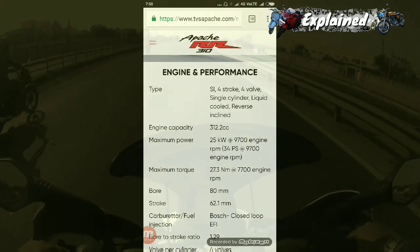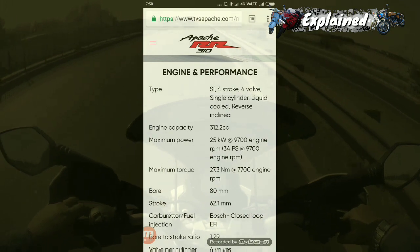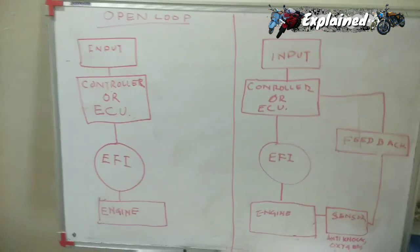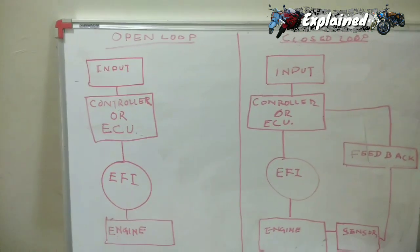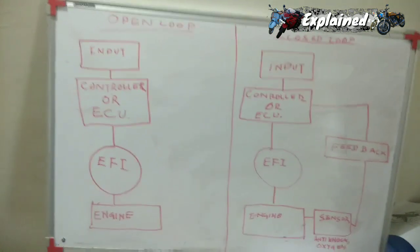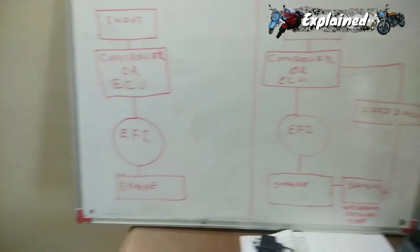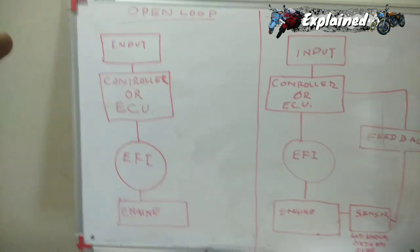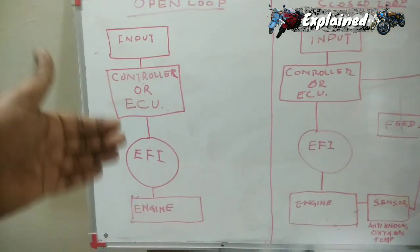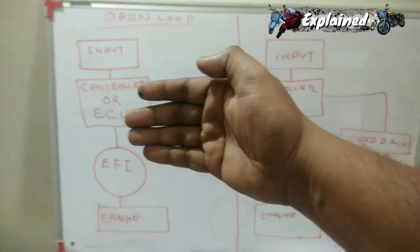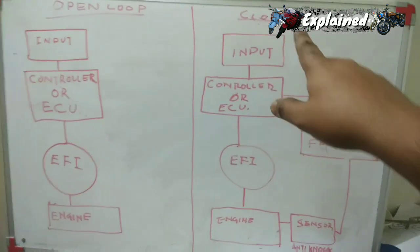For those unaware of closed-loop and open-loop systems, let's go back to the board. On the left is the open-loop system and on the right is the closed-loop system. Motorcycles in the Indian market use both. Royal Enfield bikes with fuel injection are largely open-loop. In the open-loop system, when you start the bike, the ECU controls the EFI — a combination of a fuel pump and injector — which supplies fuel to the engine, with no feedback mechanism.